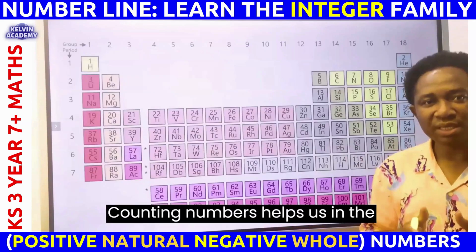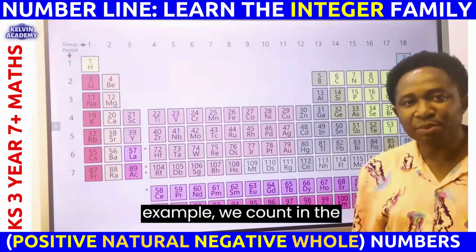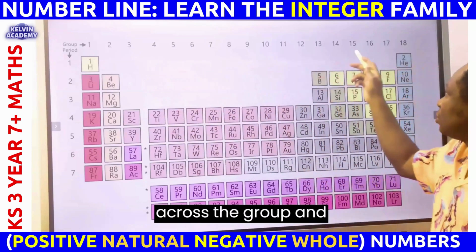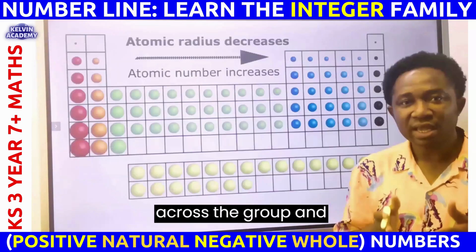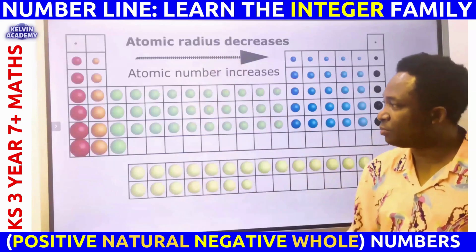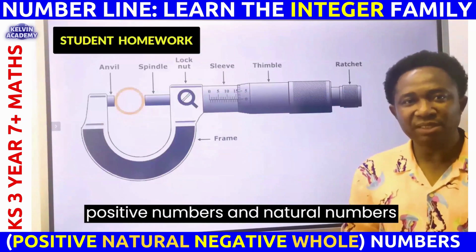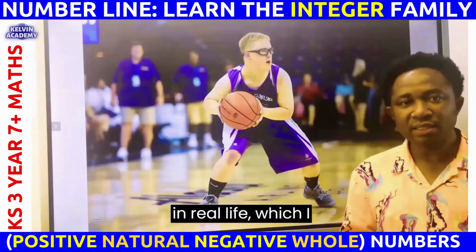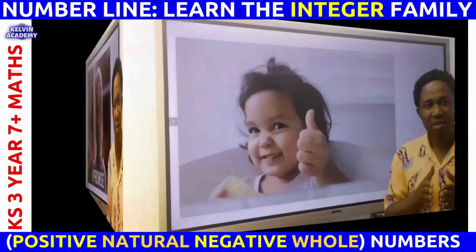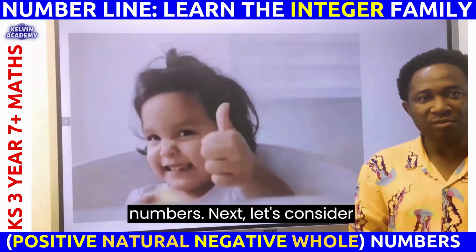Counting numbers also help in the analysis of the periodic table. For example, we count in increments of atomic numbers across the group and increments in atomic size down the period. You can identify other applications of positive numbers and natural numbers in real life. Now you can identify positive numbers or natural numbers.